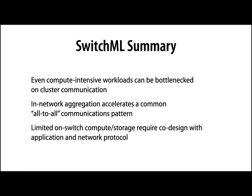On a cluster of eight nodes and several neural networks, we see speedups ranging from 20% to 300%. The variance depends on the ratio of computation to communication in a particular workload, which depends on the neural network structure and the relative performance of GPUs versus the network. We expect this to become much more valuable as we see larger clusters with faster GPUs but the same network speeds. Even compute-intensive workloads are now bottlenecked on cluster communication, so there's a real opportunity to accelerate common communication patterns using in-network aggregation.